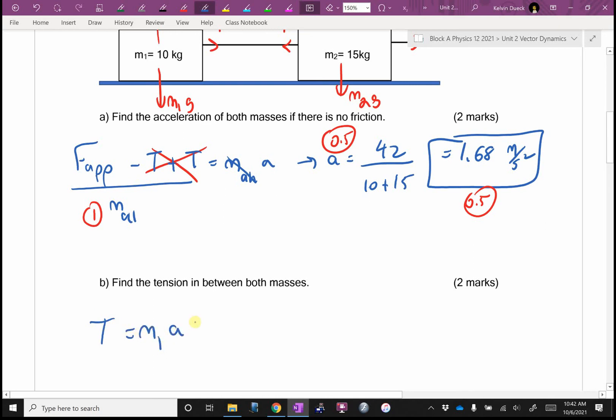So I think I can do that in my head. It's going to be 10 times 1.68, it's going to be 16.8 Newtons. Is that right? Again, one mark for the equation, half mark for the numbers, half mark for the answer. And you would have gotten something similar exactly if you used mass 2.